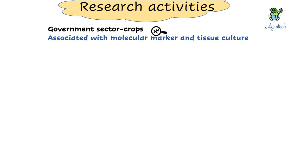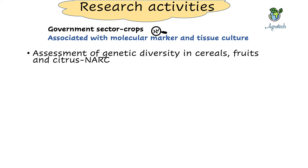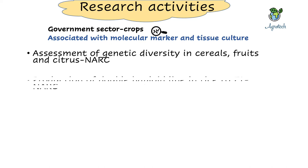The first example is the assessment of genetic diversity in cereals, fruits, and citrus, done through NARC. This is also a process of screening and identification. It helps identify phylogenetic relationships and build phylogeny trees to identify descent parents, which is useful for future crossing and hybridization work.